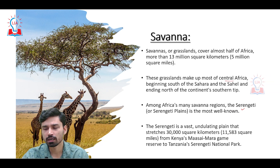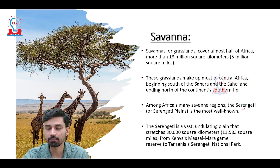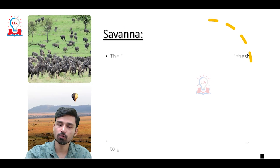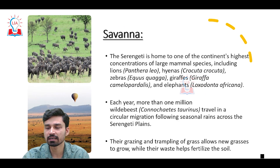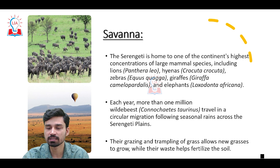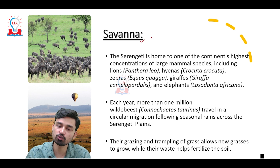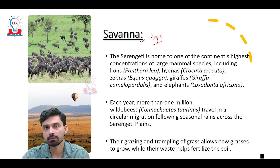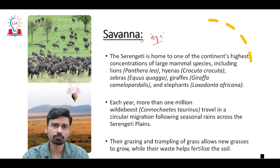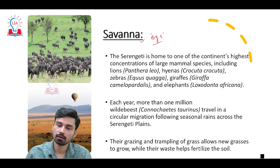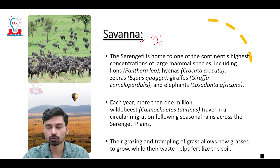It is a very vast, undulating plain that stretches for almost 30,000 square kilometers from Kenya's Masai Mara game reserve to Tanzania's Serengeti National Park. The Serengeti grassland is home to one of the continent's highest concentrations of large mammal species such as lions, hyenas, zebras, giraffes, and elephants. It is also where you will find what are popularly referred to as the Big Five animals of Africa: lion, elephant, giraffe, hippopotamus, and wild buffalo.